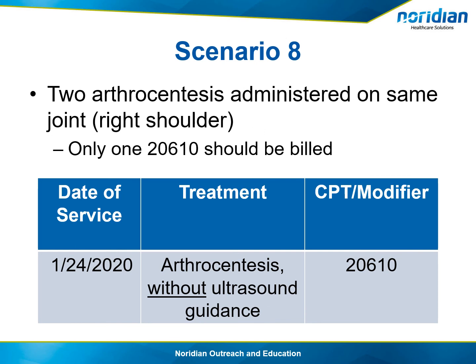In scenario 8, if two injections are administered on the same joint, only one 20610 code should be billed. For example, two injections were administered to the right shoulder. The documentation for this should include signed consent, anatomic location, preparation of the site, local anesthetic administered, name and dosage of the drug administered, patient reaction, and all postoperative instructions related to the minor surgical procedure.